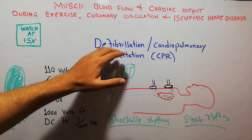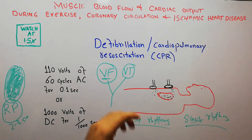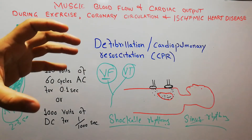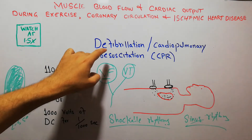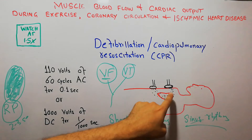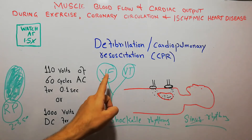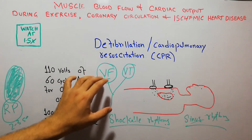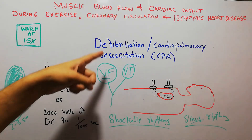Defibrillation is basically the passage of electric shock to put the whole heart into the refractory period, using a high voltage current. A moderate voltage of current can actually start ventricular fibrillation, but a strong, higher voltage can bring the heart out of ventricular fibrillation — that is defibrillation.